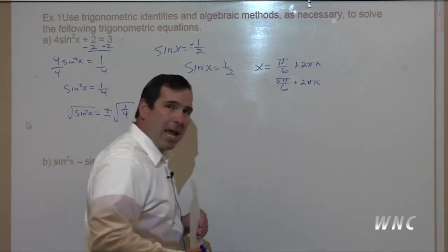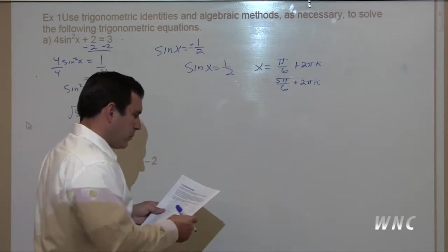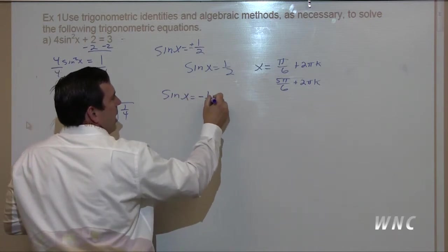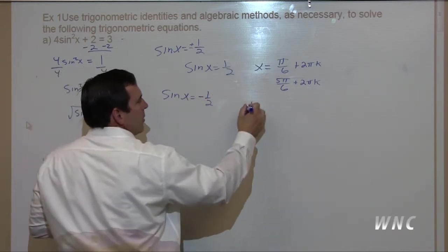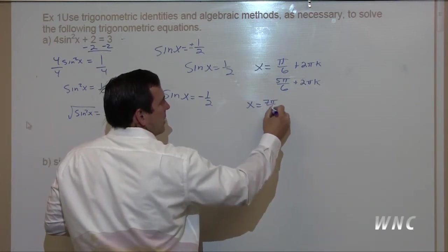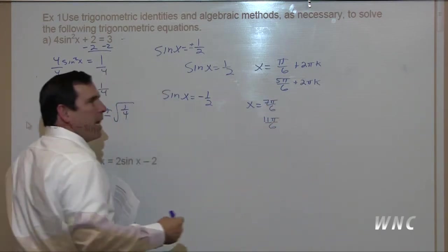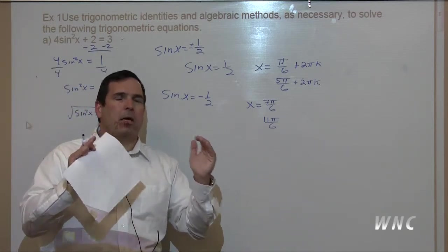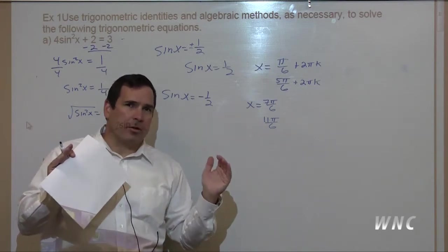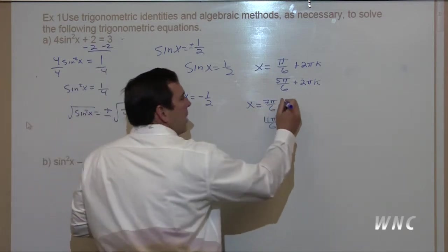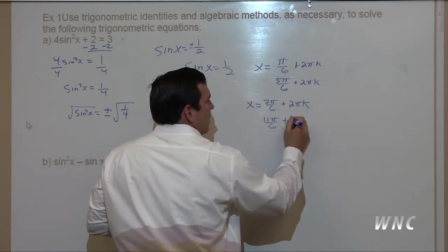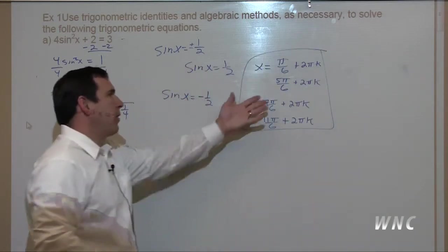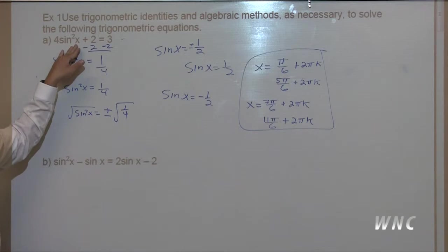Some books may have two pi n, n being an integer. And then we have sine of x equals negative one-half. That occurs whenever x is seven pi over six or eleven pi over six. Because this didn't limit our domain, we have to say plus two pi k for each. So these are our solutions — the values that make this a true statement.